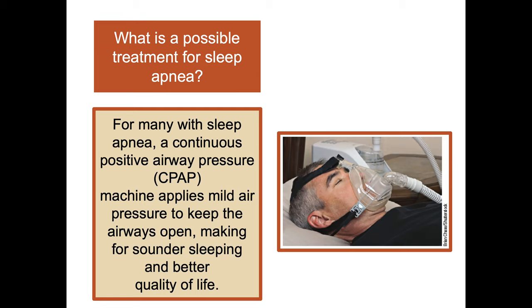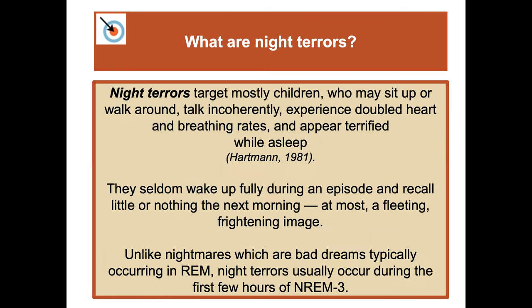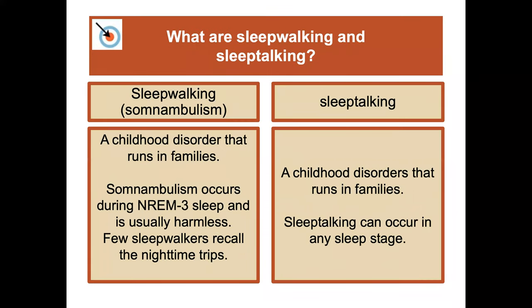Night terrors mostly target children, who sit up in the middle of the night, walk around, talk incoherently, have fast breathing and heart rates, and appear completely terrified. They seldom wake up fully and usually recall nothing the next morning. Unlike nightmares, which are bad dreams occurring during REM sleep, night terrors occur during the first few hours of NREM3 sleep. Sleepwalking — also called somnambulism — is a childhood disorder that runs in families, occurs in NREM3 sleep, is usually harmless, and few sleepwalkers recall their nighttime trips. Sleep talking also runs in families and can occur at any sleep stage.